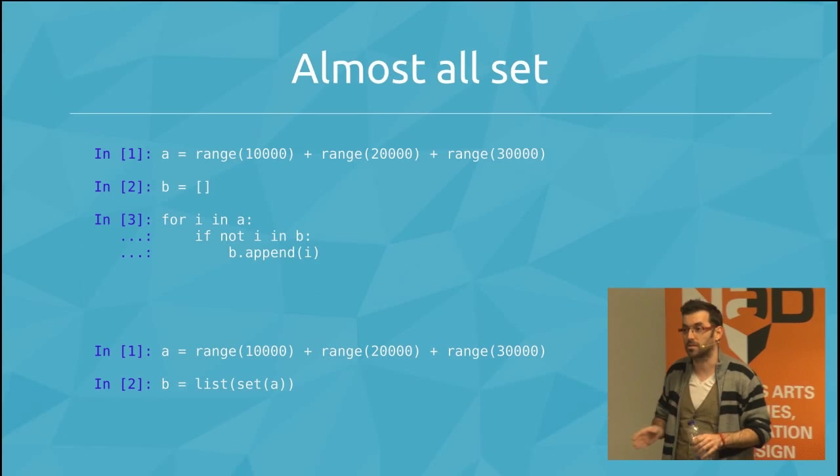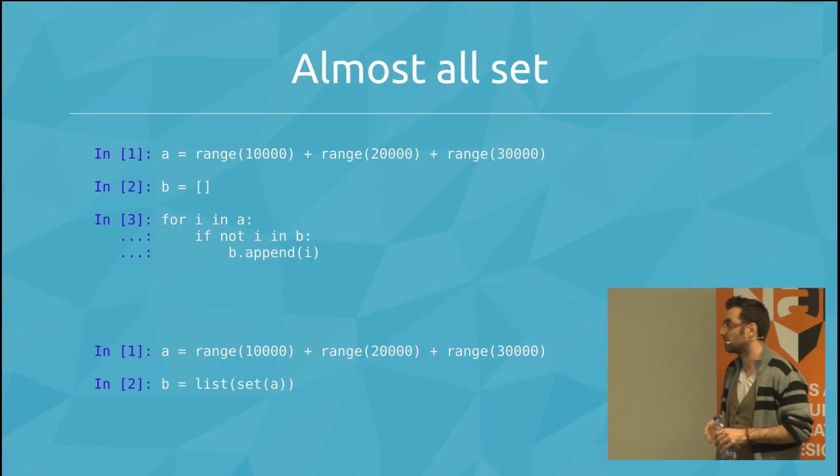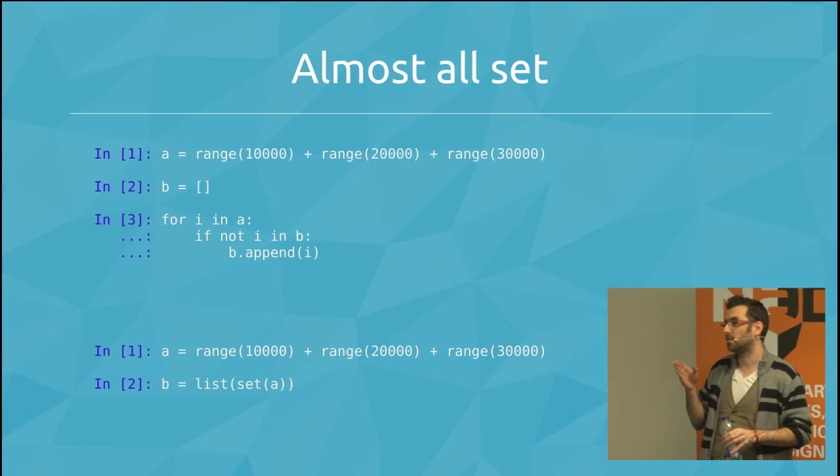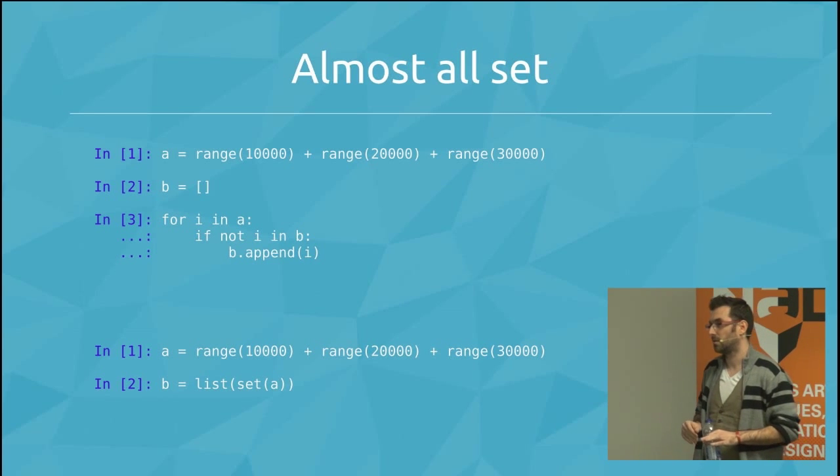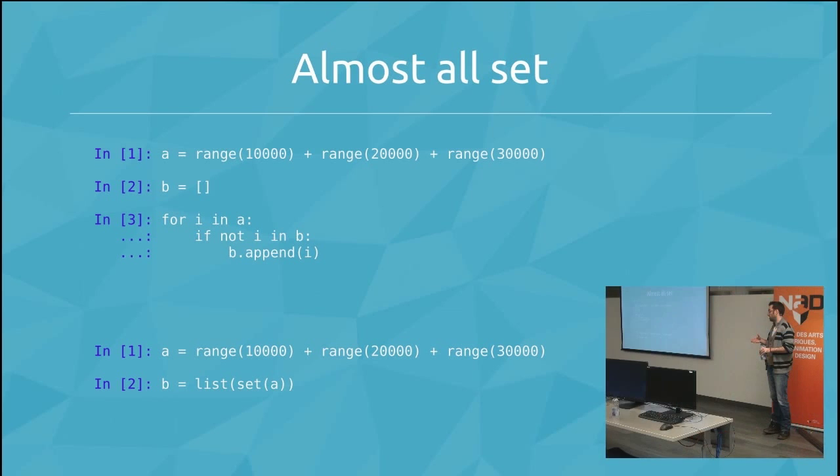That is instant. So you will do the same thing but in two lines. And that is instant. The other one is four lines and crash. So basically the set will ask Python, okay, give me only one instance of any members of the list. You turn that back in the list. You get the list of one instance.